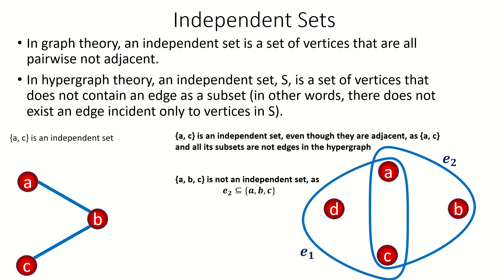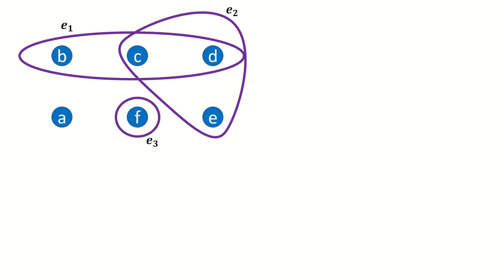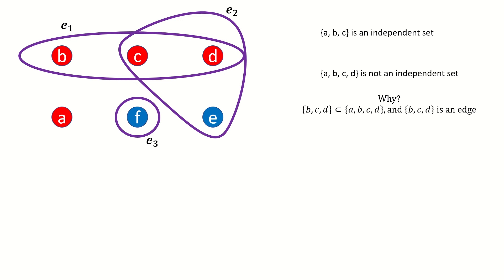As another example, in this hypergraph, the set ABC is an independent set even though B and C are adjacent. The fact that ABC is an independent set just means that there's no subset of ABC that's an edge in our hypergraph. Now if we were to include vertex D in this set, we would no longer have an independent set because BCD is an edge in our graph and it's also a subset of ABCD.